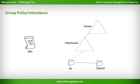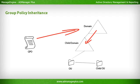Group Policy Inheritance: Inheritance is the propagation of an object's properties and qualities to its child objects. For example, the properties, rights and privileges of a group apply to all its members and also to all its child groups. Similarly, in group policies, a group policy applied to a domain will apply to all its child domains, the chain of their subsequent child domains, and all the OUs and their child OUs.